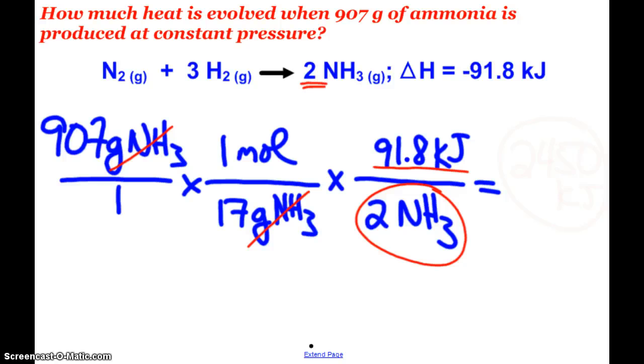And so when I do the proper math, 907 times 91.8 divided by the bottom, which ends up being 34, 2,450 kilojoules are evolved. The question asked how much heat has evolved, so I just answered 2,450. I don't have to worry about the sign here, although it would be negative if they were asking a more detailed question, but here they just said how much heat has evolved, 2,450 kilojoules.